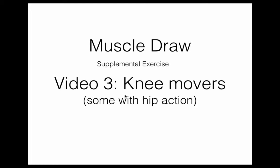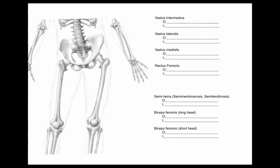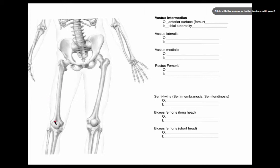In this video we're going to look at some of the knee movers, and some of these muscles will also have action at the hip. We're going to start looking at the quads — the group of four muscles on the anterior part of the femur. We'll start with the vastus intermedius, which is the deepest of the quad muscles. Its origin is the anterior surface of the femur, and all of the quads are going to insert on the tibial tuberosity.